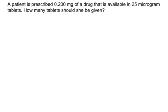Today we're working on a dosage problem with two sets of conversions in it. A patient is prescribed 0.200 milligrams of a drug that is available in 25 microgram — notice that's microgram — tablets. How many tablets should she be given?